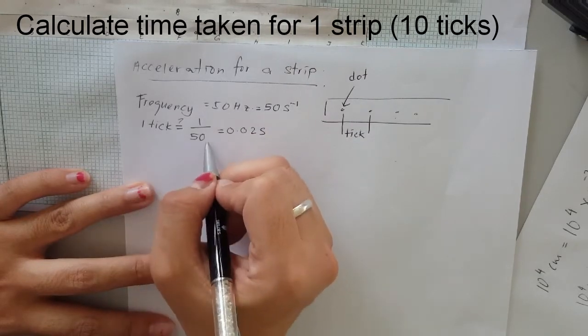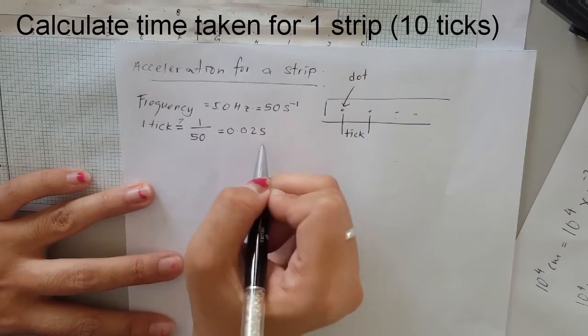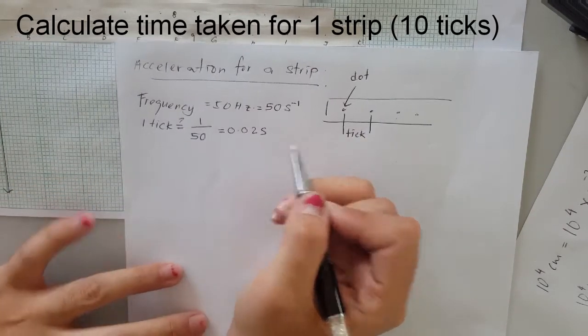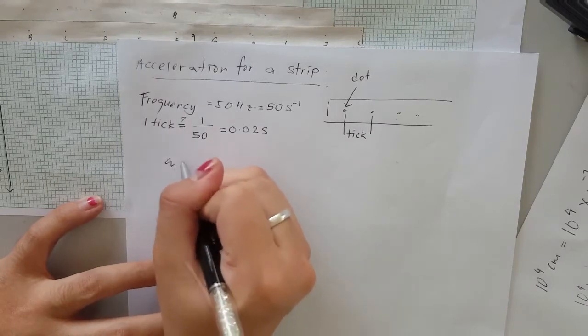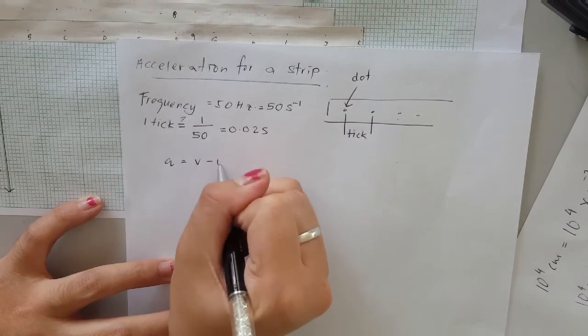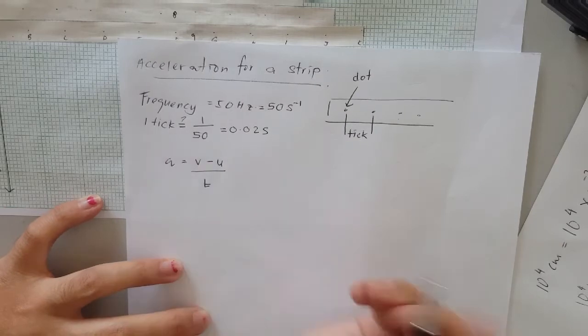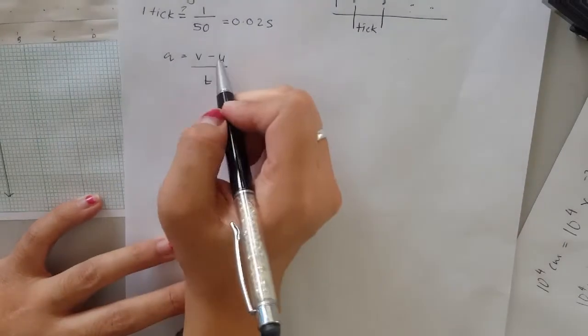Now we have to find the average velocity because we know the formula for acceleration: a = (v - u)/t. So we need to find the initial velocity.